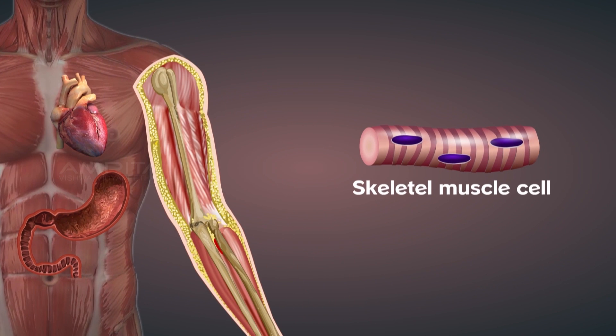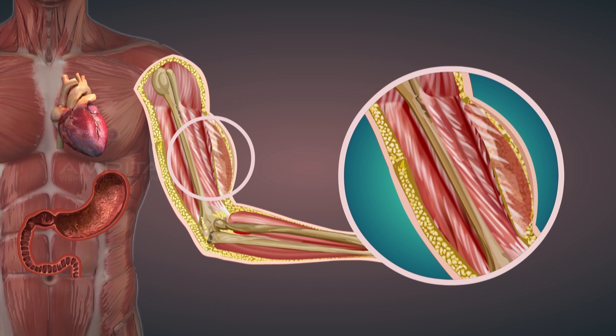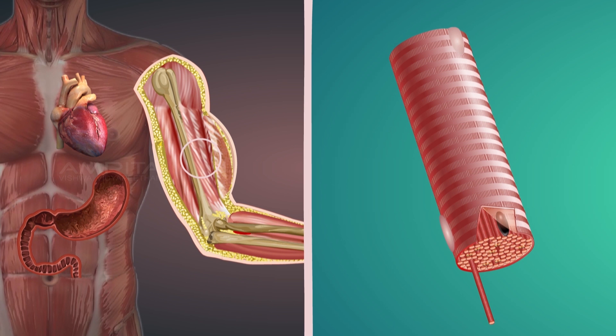The skeletal muscle helps in locomotion and other voluntary body movements. It is made of long fibers with alternate light and dark bands or striations so skeletal muscles are also called striated muscles.